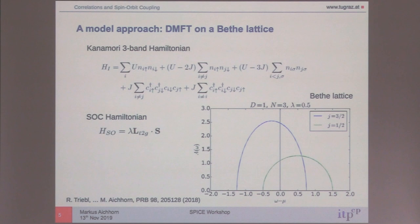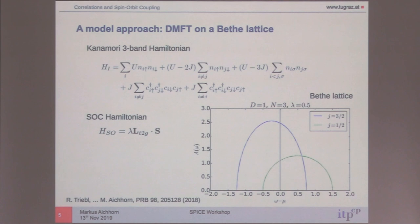Before I go to the materials, I want to look at this from a model perspective — find a very simplistic model with not so many parameters that allows playing with the basic ingredients. We take a Bethe lattice. In the DMFT community, this is very prominent because the Bethe lattice allows solving DMFT kind of exactly, so there is no DMFT approximation involved in this calculation.